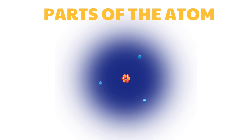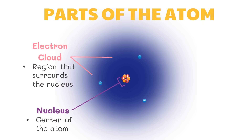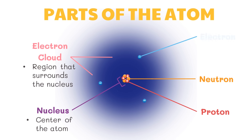Atoms are composed of two regions. The nucleus is the center of the atom that contains the mass of the atom — this is where protons and neutrons are located. The electron cloud is the region that surrounds the nucleus and contains most of the space in the atom.